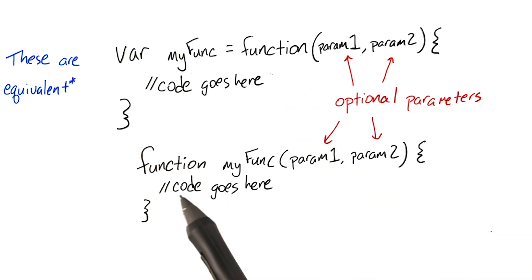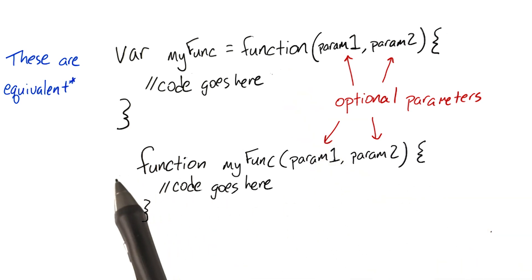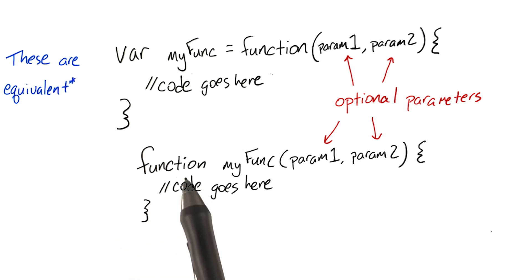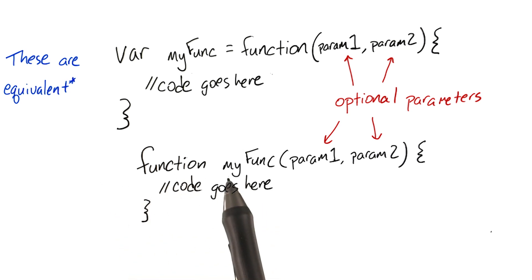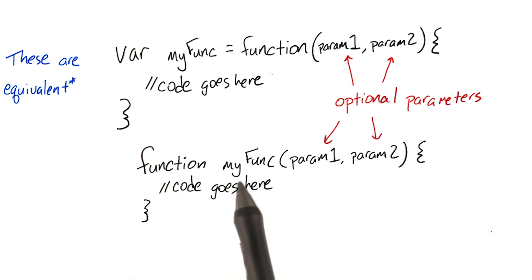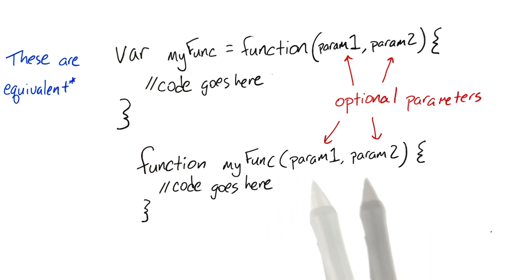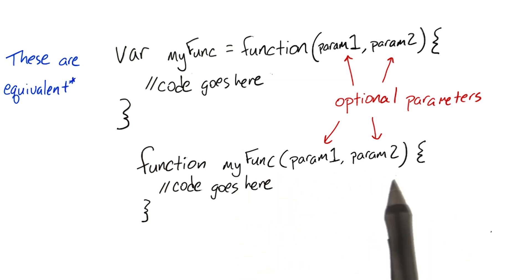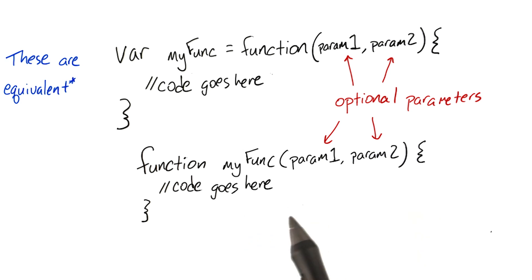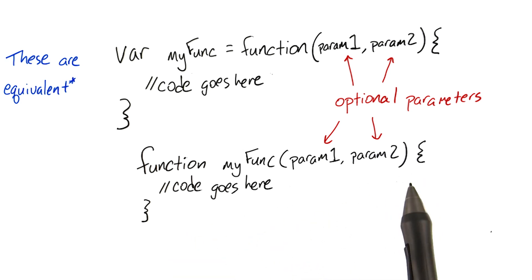And this is the second syntax. In this case, we actually don't have to start with var. We just start with the keyword function, and then we give our function a name, which in this case is still myfunc. Then, after myfunc, we have optional parameters inside parentheses, and then the body of the code goes between the two curly braces, just the same way we do with if statements and loops.